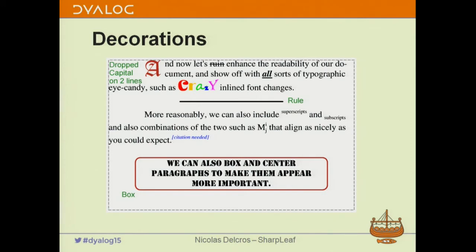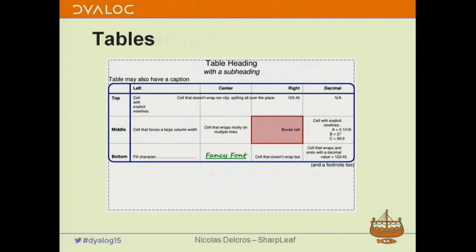You can have rules to separate paragraphs — they are nice. Superscripts and subscripts, obviously, and combinations of the two. And you can box paragraphs with some kind of line style. So far you've seen most of what Sharpleaf manipulates in terms of typography.